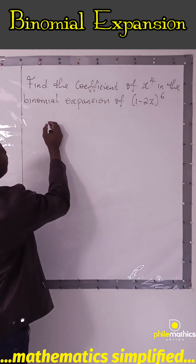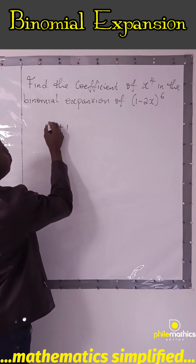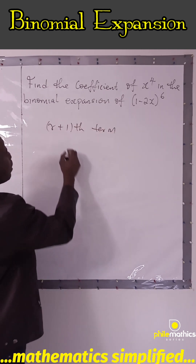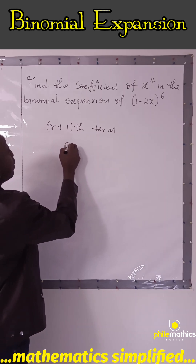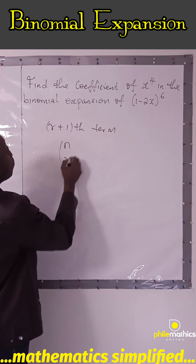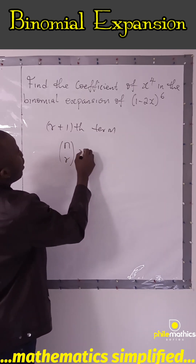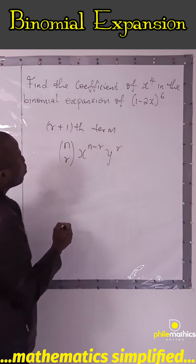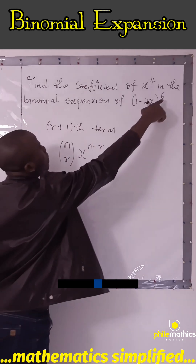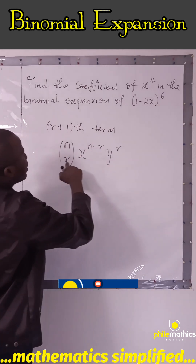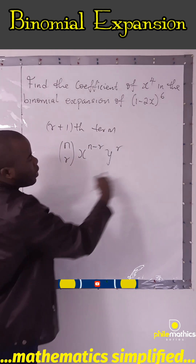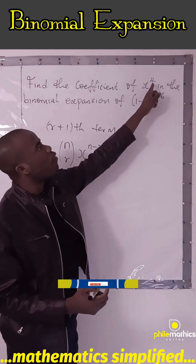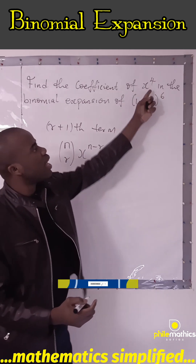The formula says the (r+1)th term is given as n combination r, times x to the power (n minus r), times y to the power r, where n is the given power and r is the number of the term in the sequence. So to get the x to the power 4, since x is in the second term,